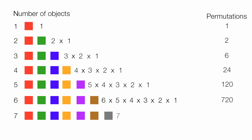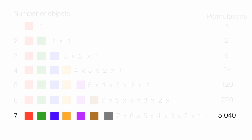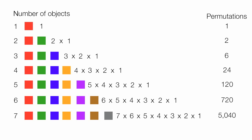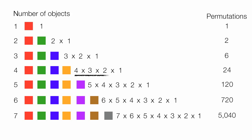With seven objects — my last one — seven times six times five times four times three times two times one equals 5,040. It turns out I can take these seven objects and create 5,040 different permutations. You probably notice the same pattern, and there's a word and a symbol for this — it's called factorial.